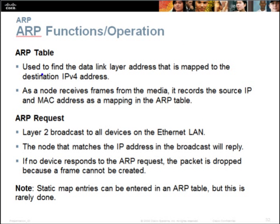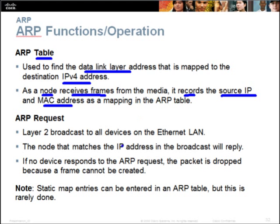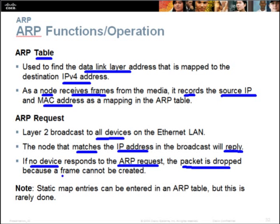The MAC address table lists data link layer addresses mapped to destination IPv4 addresses. Every time a node receives a frame from the network, it records the source IPv4 address in a table for later use. For an ARP request, the node performs a layer 2 broadcast to all devices on the network, and devices that match the IPv4 address in the broadcast will reply. If no device responds, the data packet is dropped because no frame can be created.